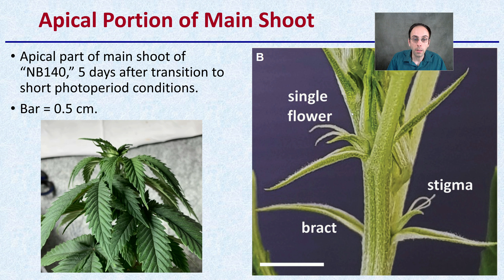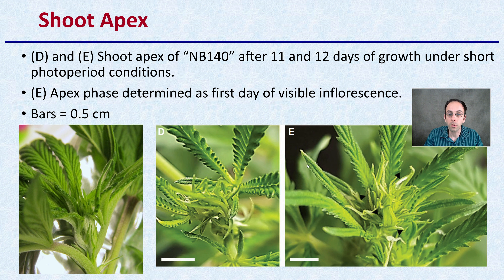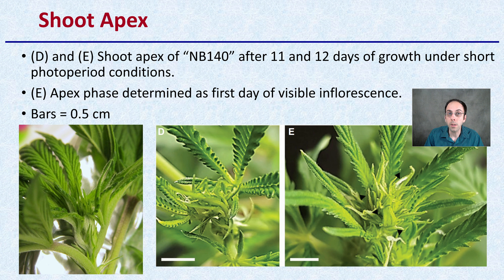The apical portion of the main shoot, shown here five days after transition to a short photoperiod — this bar represents half a centimeter — will be induced into flowering by the short photoperiod. We can confirm this plant is female because female flowers are being produced. At 11 to 12 days under short photoperiod, the apex phase is determined by the first day of visible inflorescence — the first visible flower. That apical region at the top of the plant is a meristematic region where a lot of cell division occurs, making it the site of flower production.